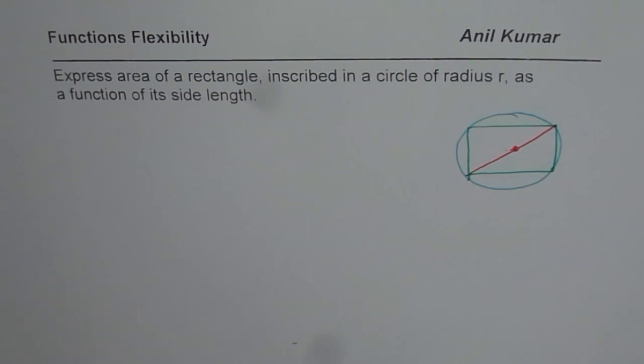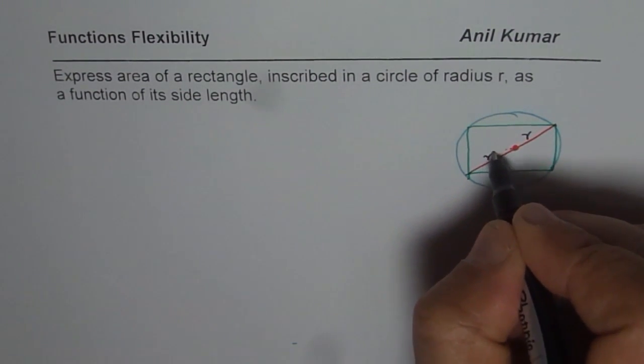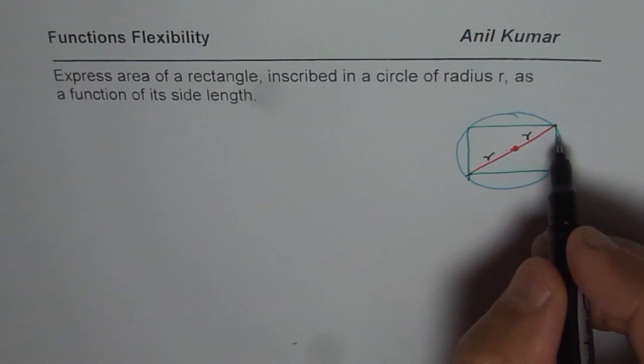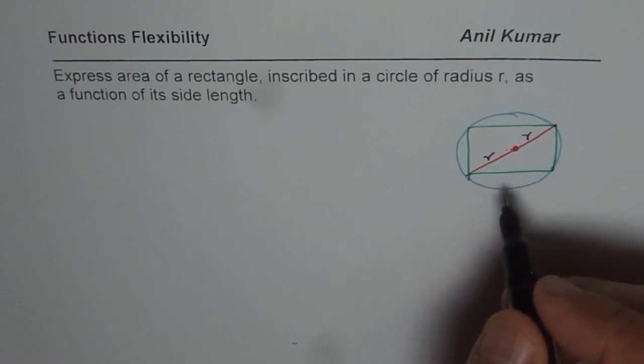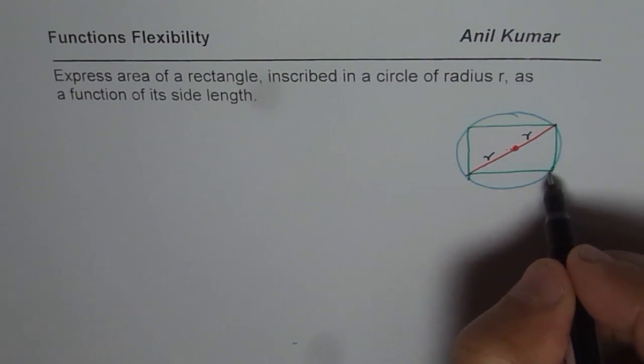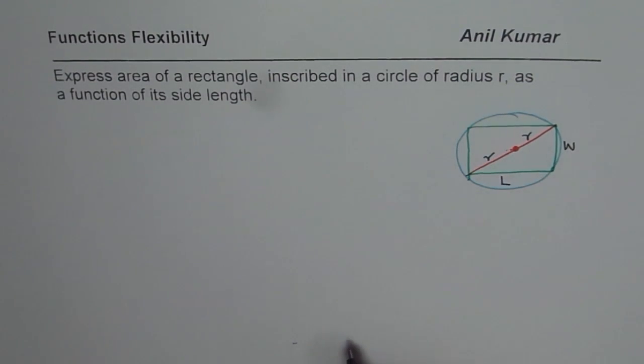So now we can label it a bit. So we say let this be the radius. So that will be the other side of the radius. So the diagonal length as you can see is equal to 2r. And let us say this is length and that is width for us. So length of this rectangle and width of the rectangle.